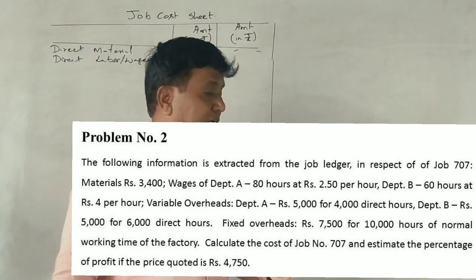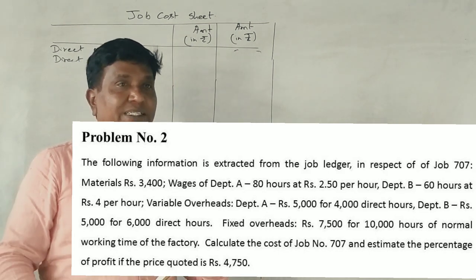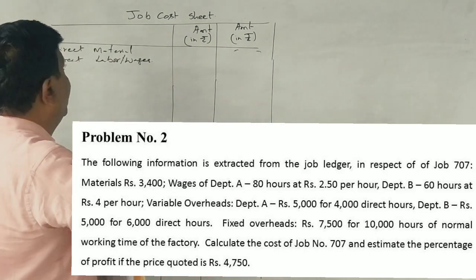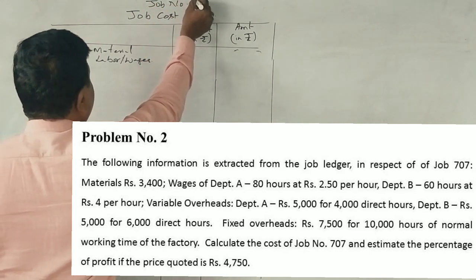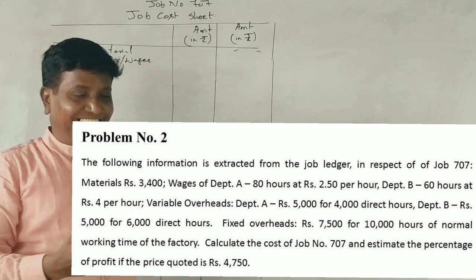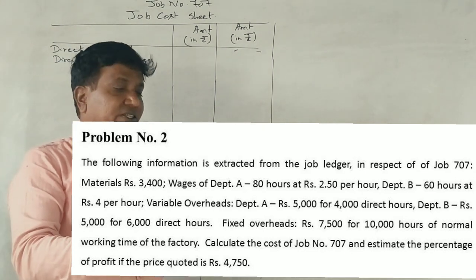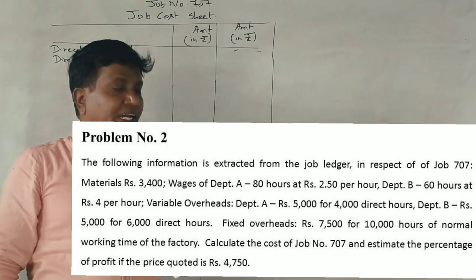The following information is extracted from the job ledger in respect of Job Number 707. Materials: Rs. 3,400. Wages of Department A: 80 hours.